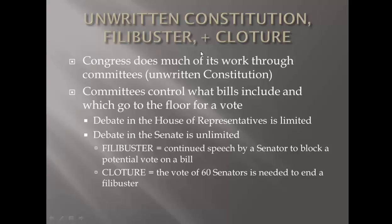There is something known as the Unwritten Constitution — things that just happened over time, not written down, but part of our politics. Examples include the president's cabinet, political parties, and only serving two terms. Congress does a lot of its work in committees, and you won't find the word 'committee' in the Constitution — Congress developed that system because it's the most effective way to get work done. Committees control what bills include, which ones go to a vote, how the language looks, and whether to continue pursuing them at all.